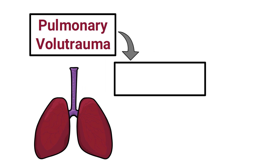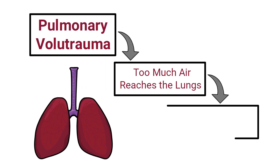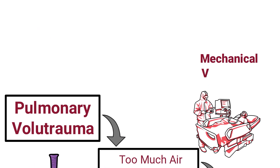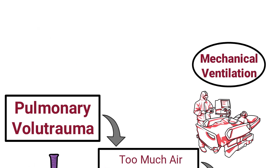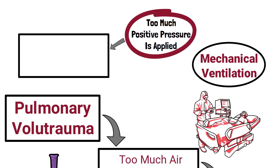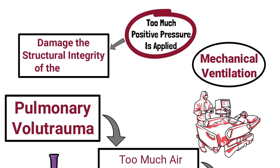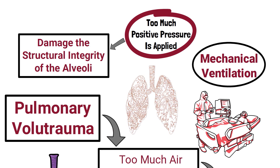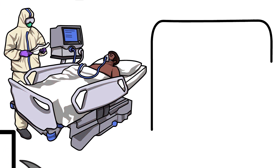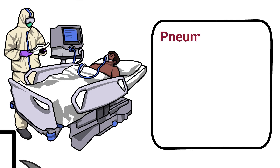Pulmonary volutrauma occurs when too much air reaches the lungs and can result in alveolar rupture or injury. This can occur in patients receiving mechanical ventilation when too much positive pressure is applied, damaging the structural integrity of the alveoli and leading to serious medical conditions, one of which being a pneumothorax.